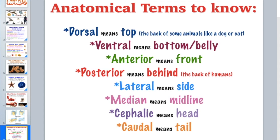Ventral means bottom — the belly area of a dog, the bottom of a crayfish or turtle. If a turtle flips over, its ventral side faces up, which is not good for the turtle. Anterior refers to the front, and posterior refers to the back — think of 'post' as in after or behind, so it's toward the rear.